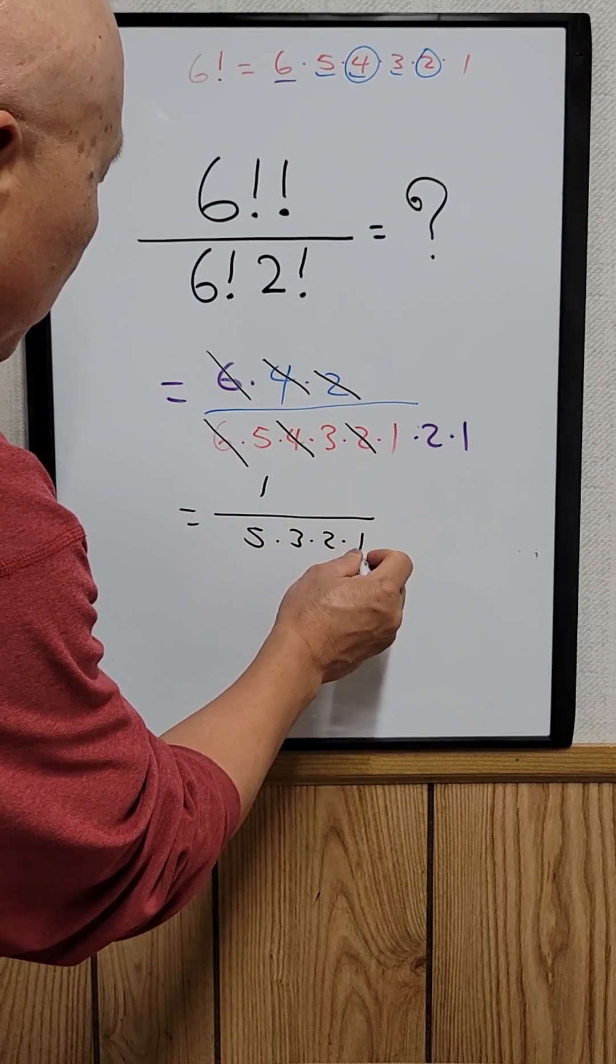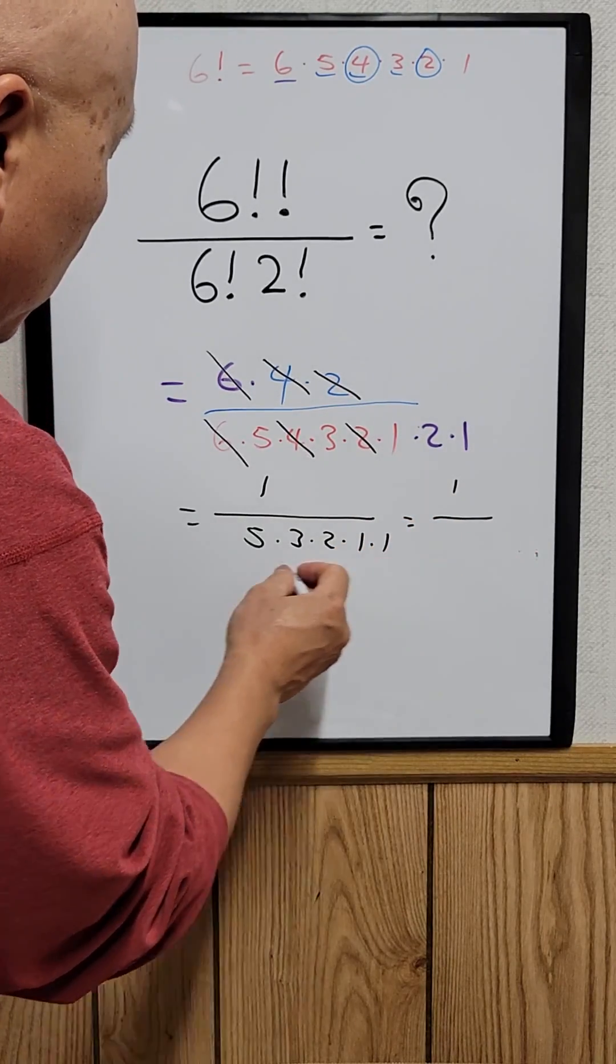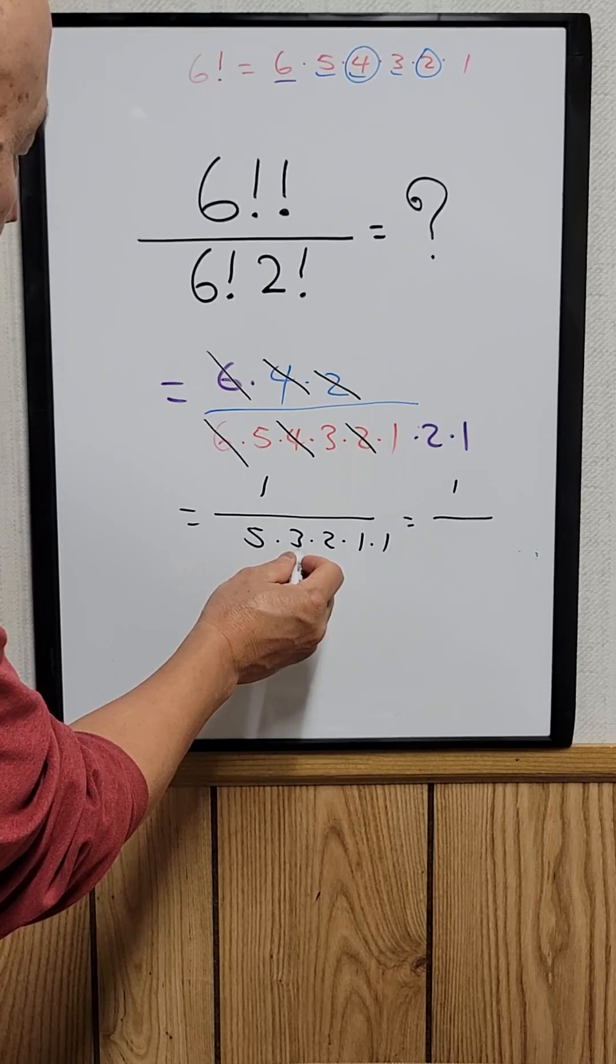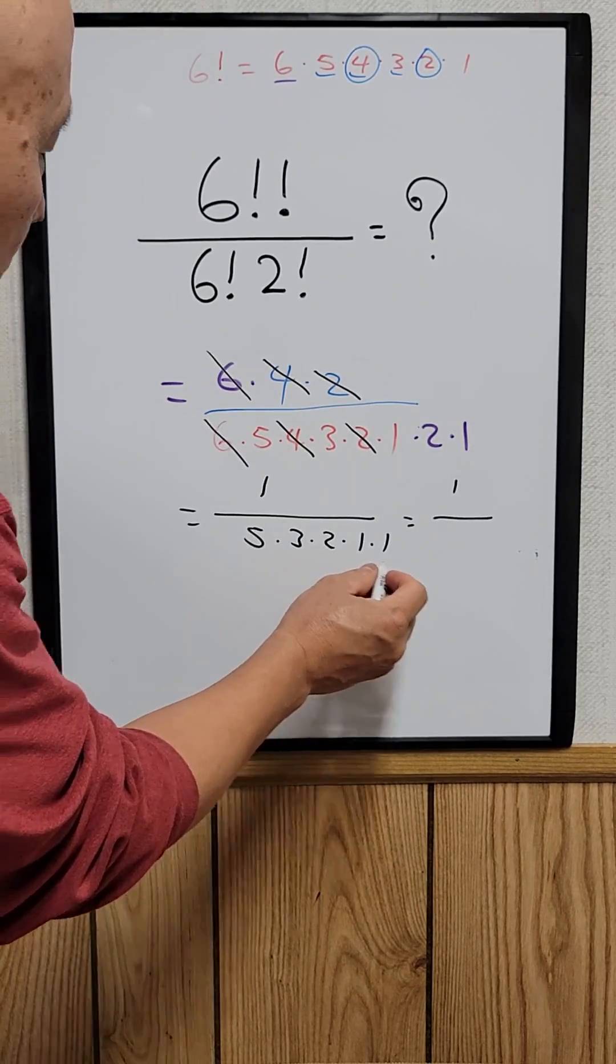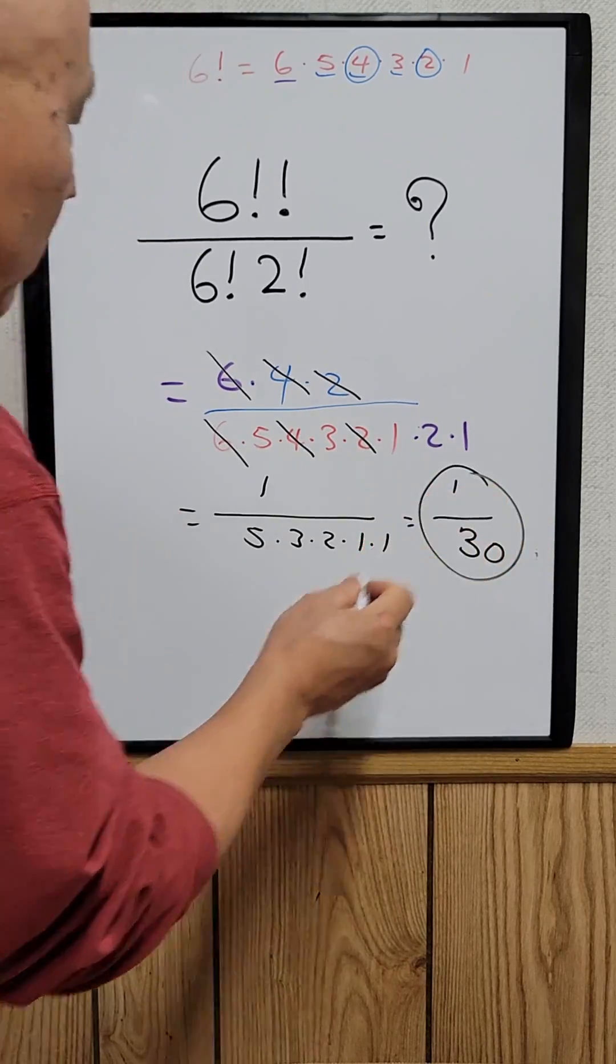Which is equal to one, five times three is fifteen, fifteen times two is thirty. So the answer is one over thirty.